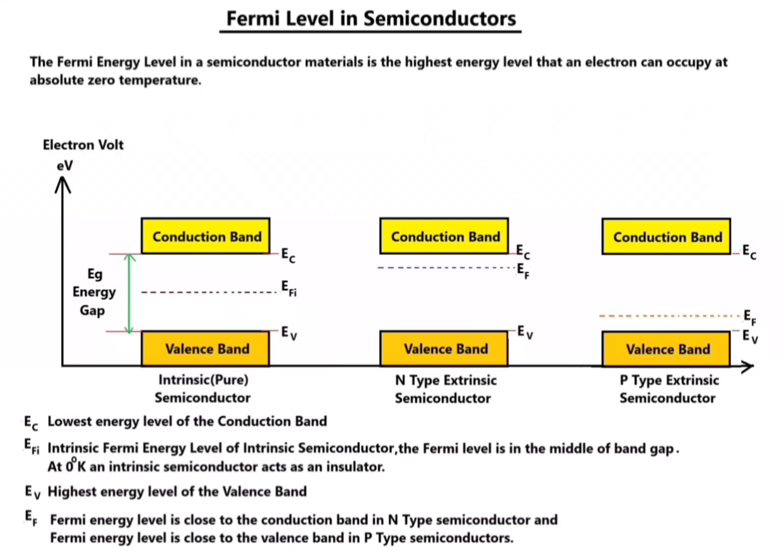Hello. The Fermi energy level in a semiconductor material is the highest energy level that an electron can occupy at absolute zero temperature. The diagram shows intrinsic semiconductor material, N-type extrinsic semiconductor material, and P-type extrinsic semiconductor material.